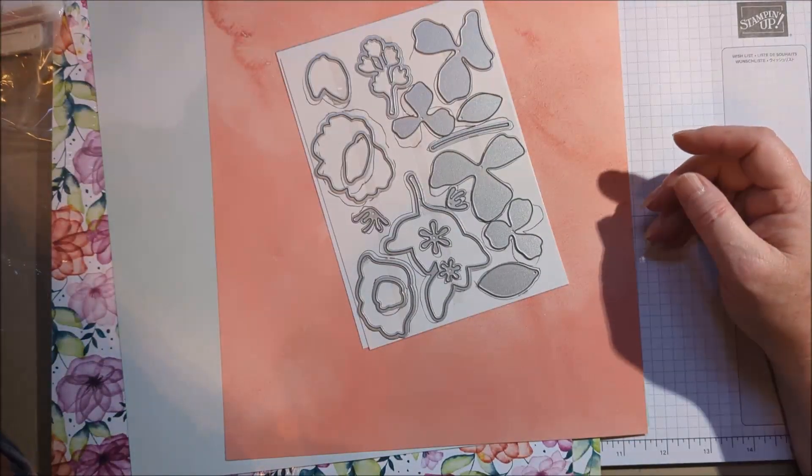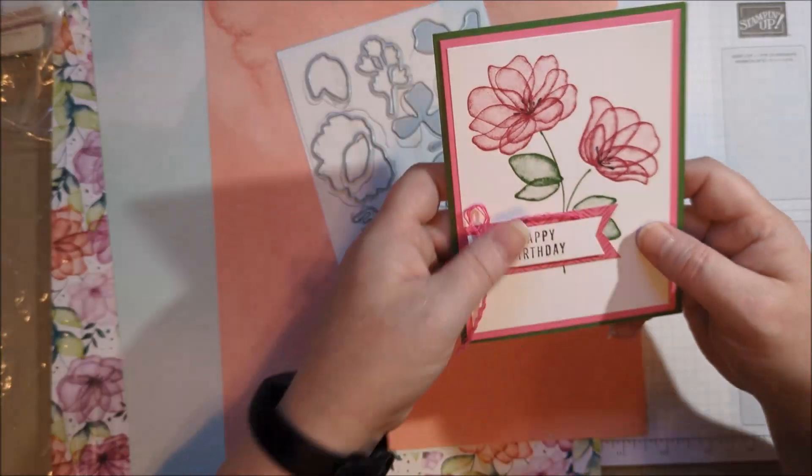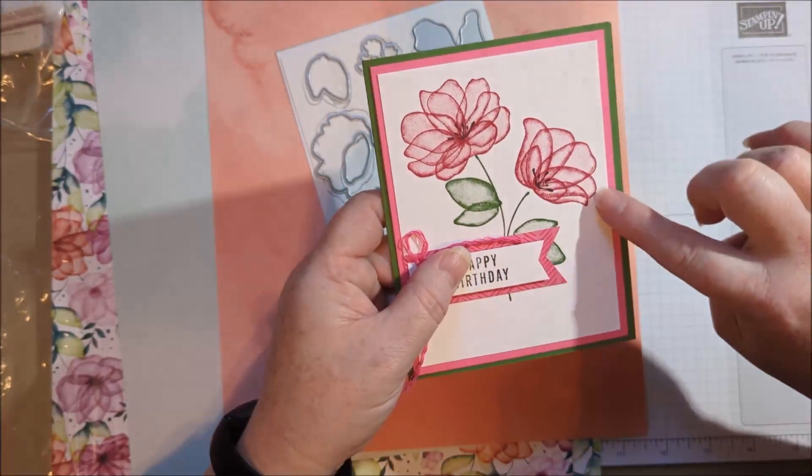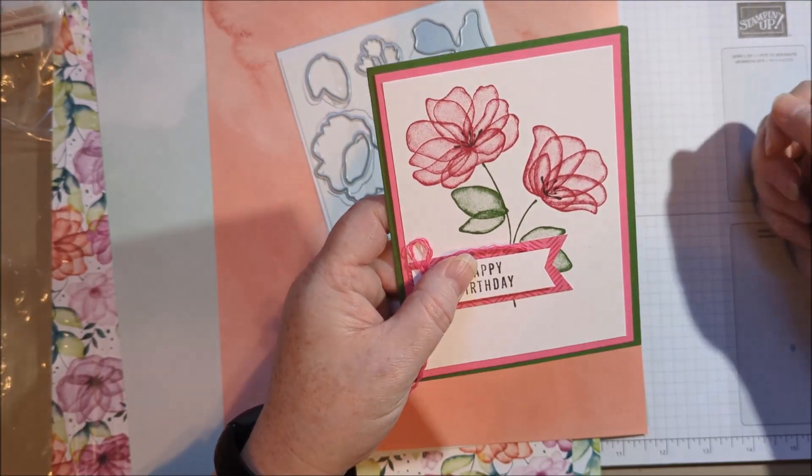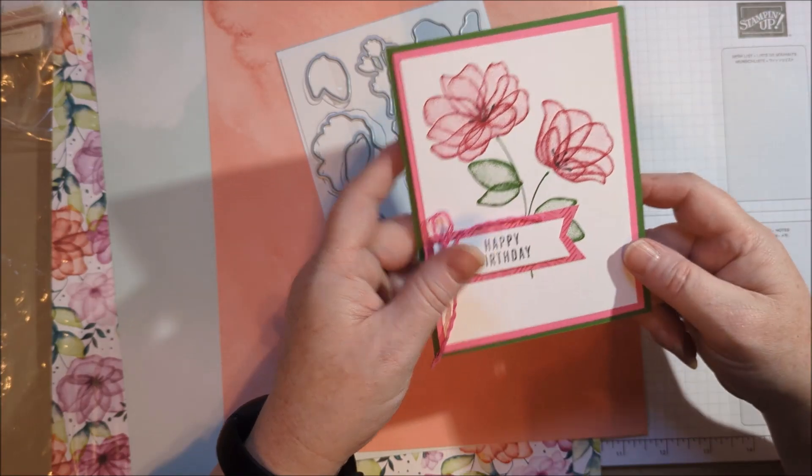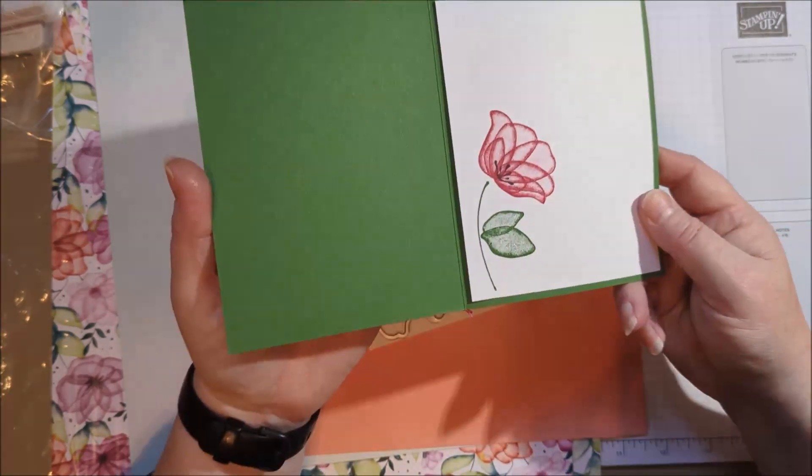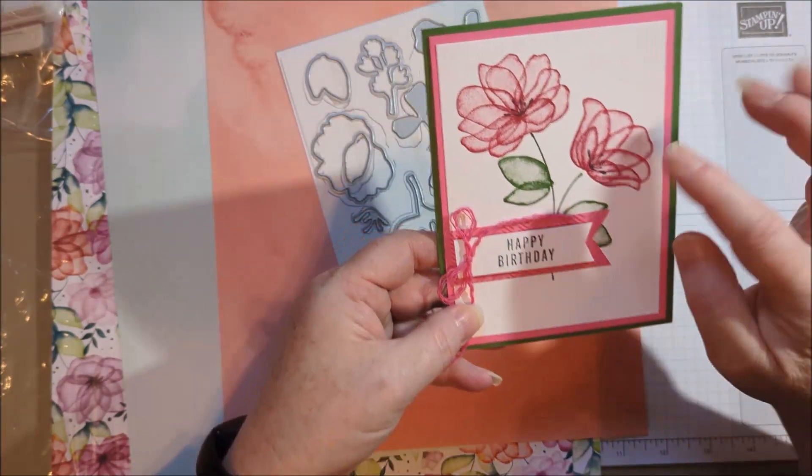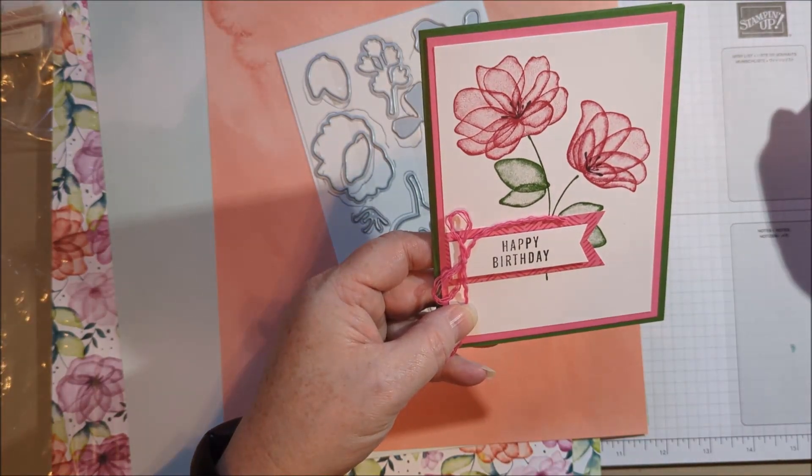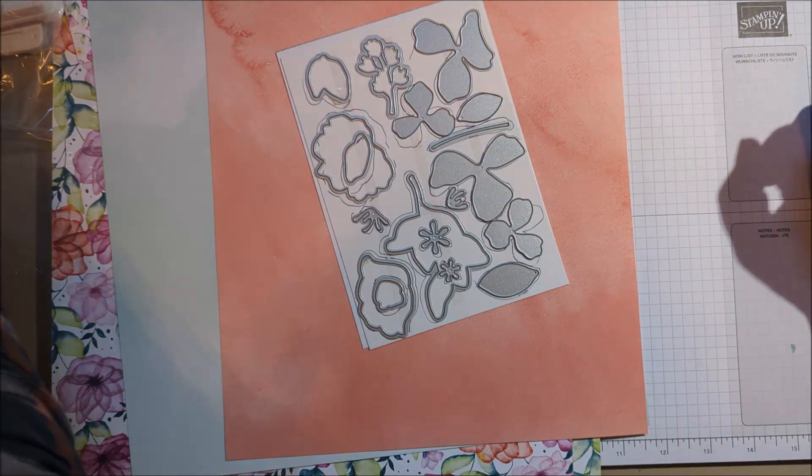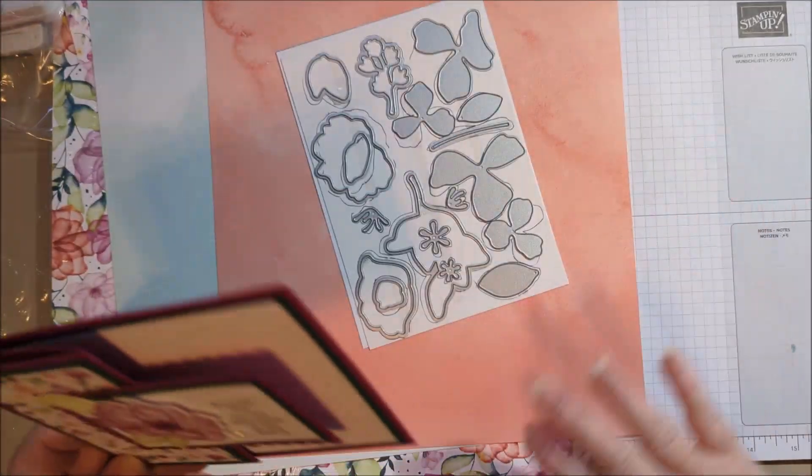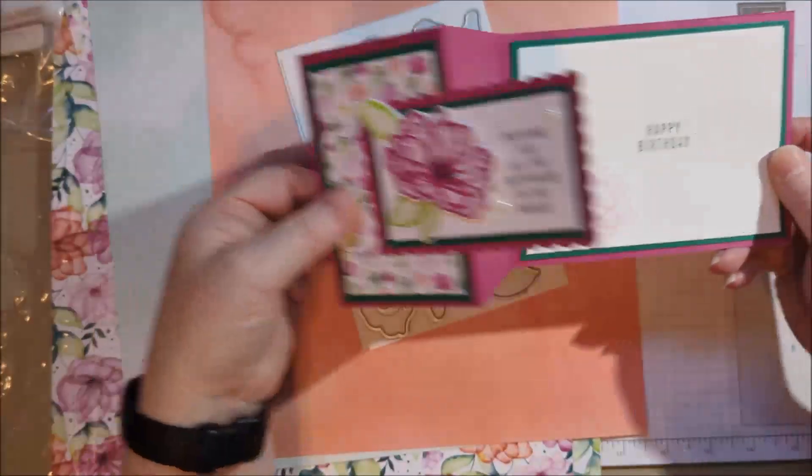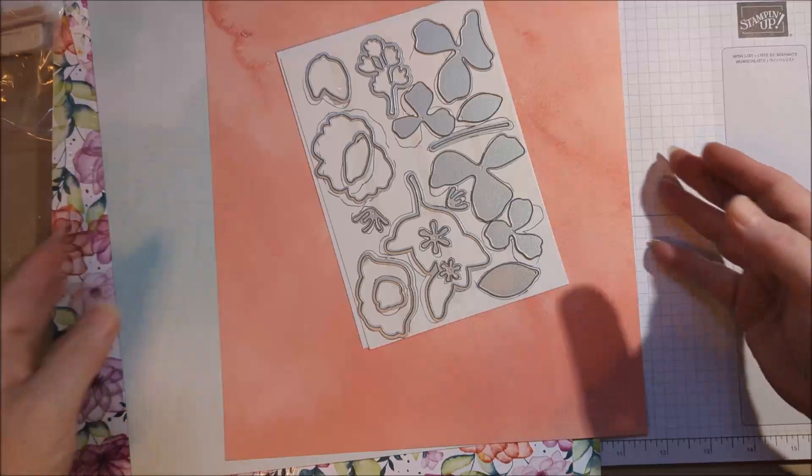And then I have another project. Here is another one where you've got these just beautiful flowers. They're just so pretty. And you can do the inside as well. Just love that. Such a soft look. And then what we're going to make together uses this paper. And we're going to make this Z-fold.